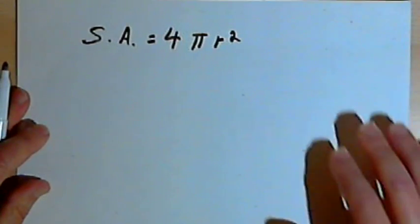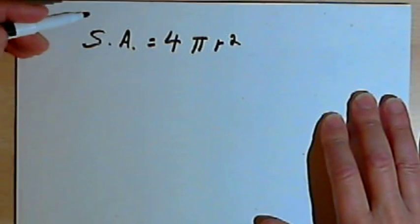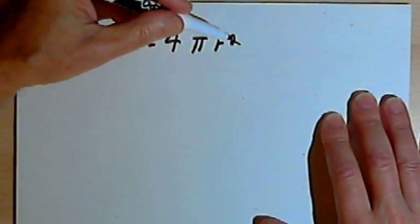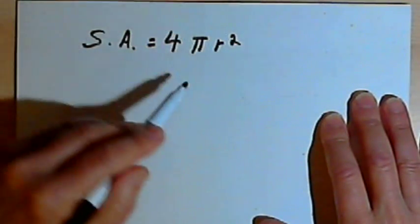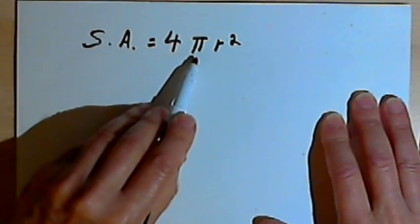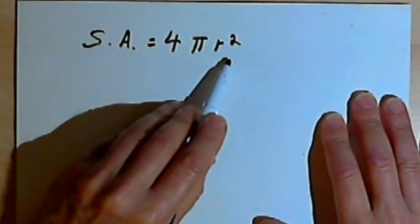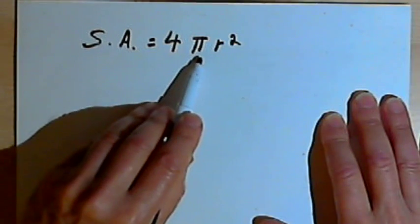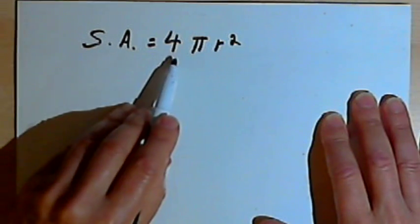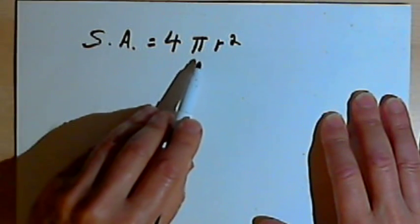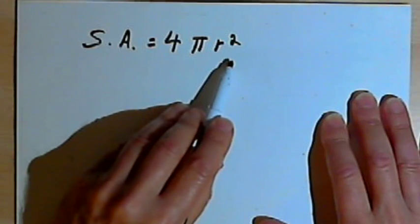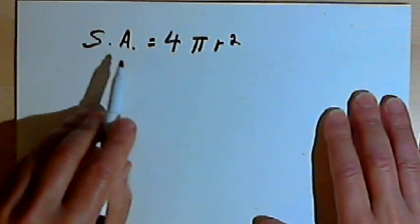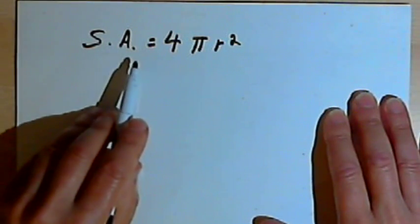The formula for the surface area of a sphere is 4 pi r squared. You might remember that pi r squared is the formula for the area of a circle. So to remember this, all you've got to do is take that area of a circle, multiply it by 4, and you've got the surface area of a sphere.